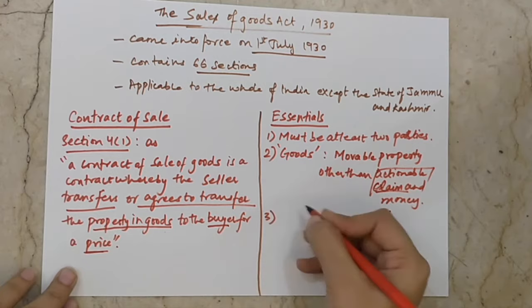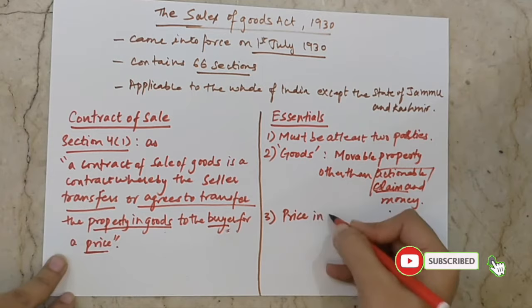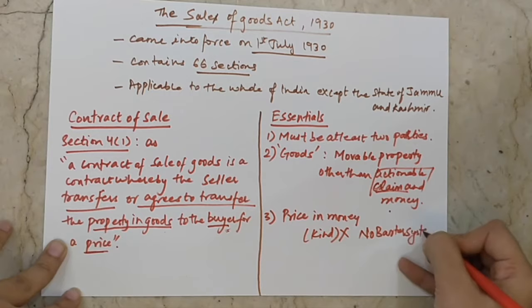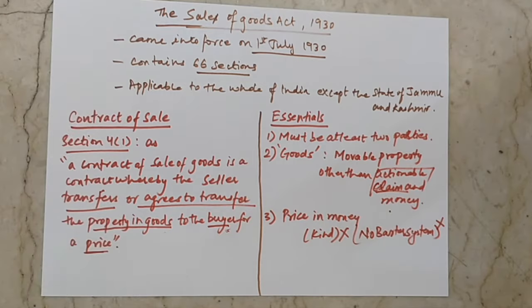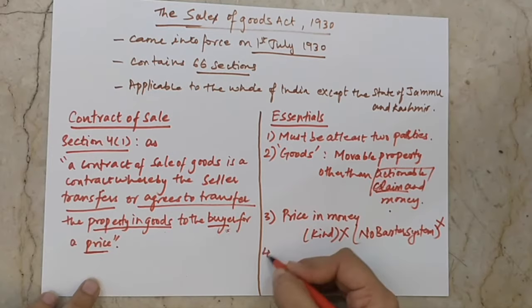The third essential is price. The seller transfers the property or agrees to transfer it for a price, and that price is always paid in money. Payment in kind is not accepted — not even a barter system. For example, exchanging one bag of wheat for one bag of rice is a barter system. There is no barter or payment in kind; only money is accepted as price.